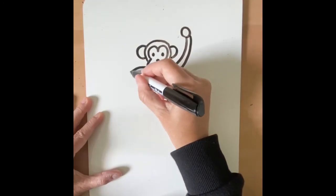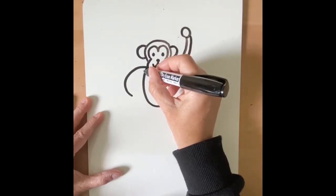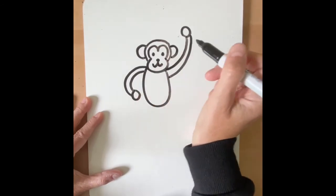And let's make his arm going this way. We'll make him silly. And then again, I'm going to follow that line around, and then make an oval for his hand.